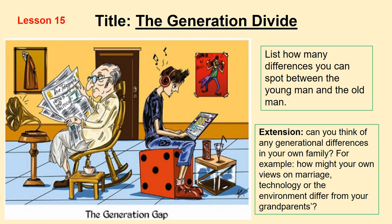List how many differences you can spot between the young and the old man in the picture. For instance, look at how they listen to music — the old man is using something to listen to music; I'll be interested to see if you know what it is. And the young man is also listening to music. These are generational divides based on how old they are, basically. Once you've done that, think for a little bit about any generational divides within your own family — how your views on marriage, technology, or the environment differ from your grandparents or older people within your family. Pause the video and start thinking about the generation.